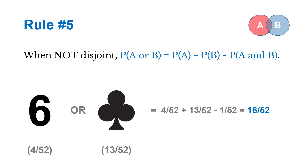For example, if the events are getting a six — there are four sixes in a deck — or getting a club — there are 13 clubs in the deck — we add those two individual probabilities together, then subtract the probability of them occurring at the same time. There's only one card that is both a six and a club, so when we subtract that overlap, we get 16 over 52.